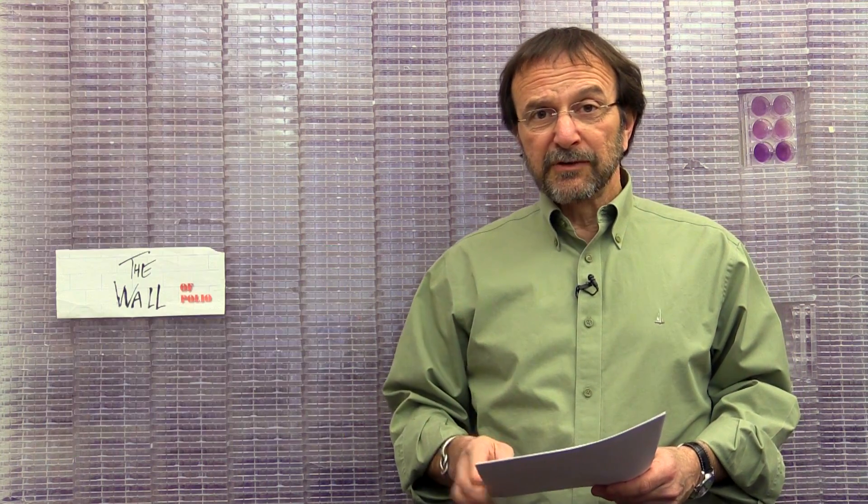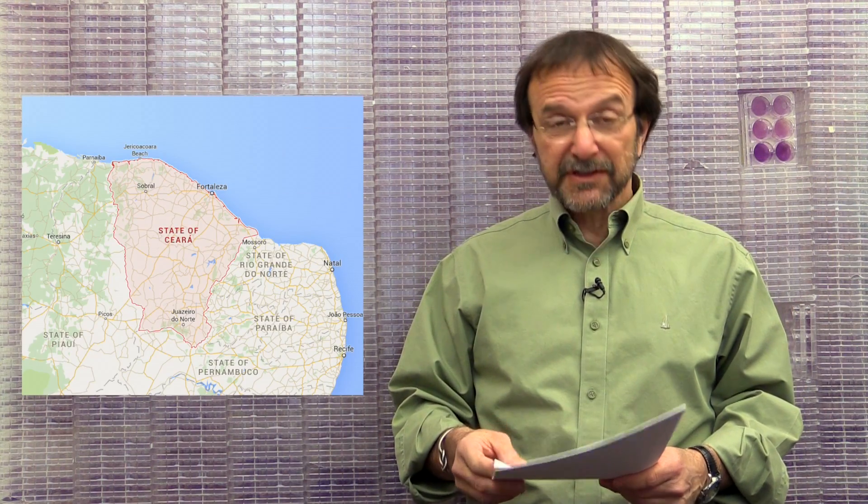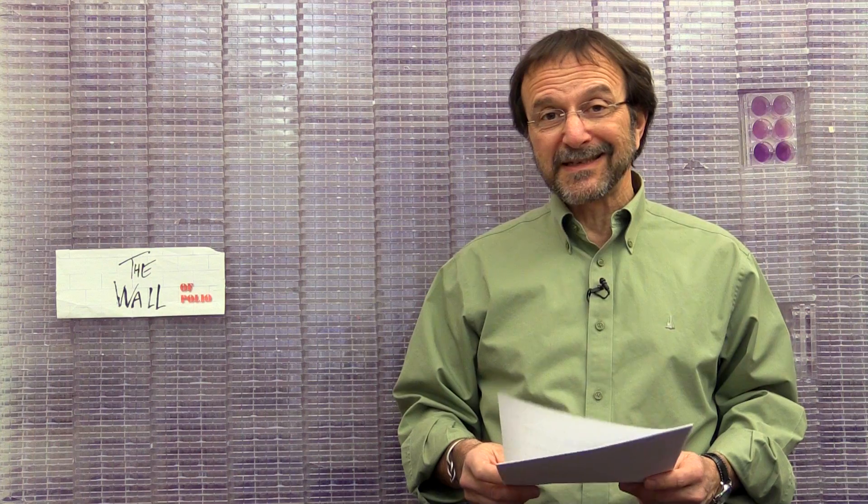These animals were from diverse parts of Ceara State, which is where Zika virus is currently circulating. When they sequenced the PCR product, they found that it was 100% identical to the currently circulating Zika virus strain in Brazil. Now, these animals were all free-ranging. The marmosets were free-ranging, but they had contact with people, and the capuchins were pets, so they also had contact with people.